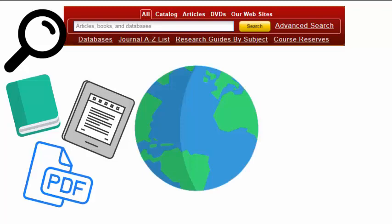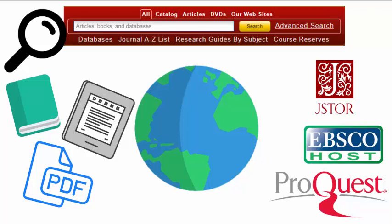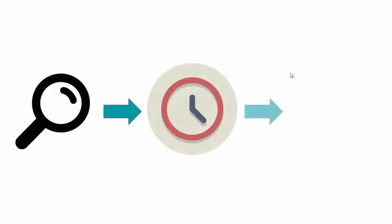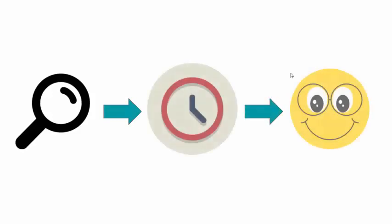Our library subscribes to materials with their own search functions called databases. Our online catalog allows you to search through multiple databases at once and has benefits over Google or even Google Scholar for doing academic research. Using the catalog correctly can even save you time in your research.